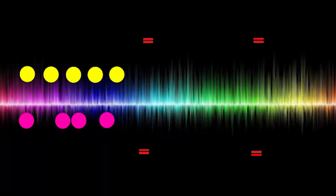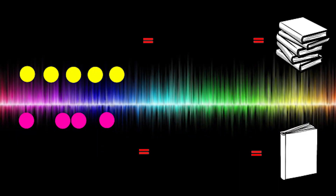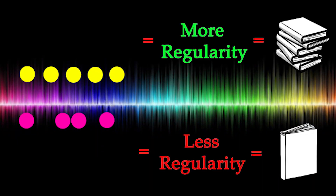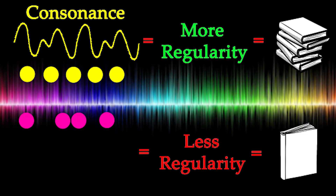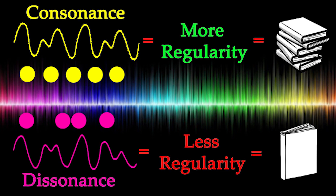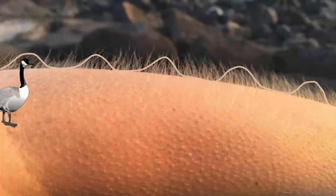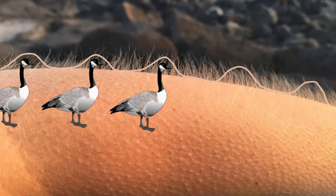The less random a signal is, the more information or regularity it contains. Therefore, consonant notes produce higher regularity with more information than dissonant notes.